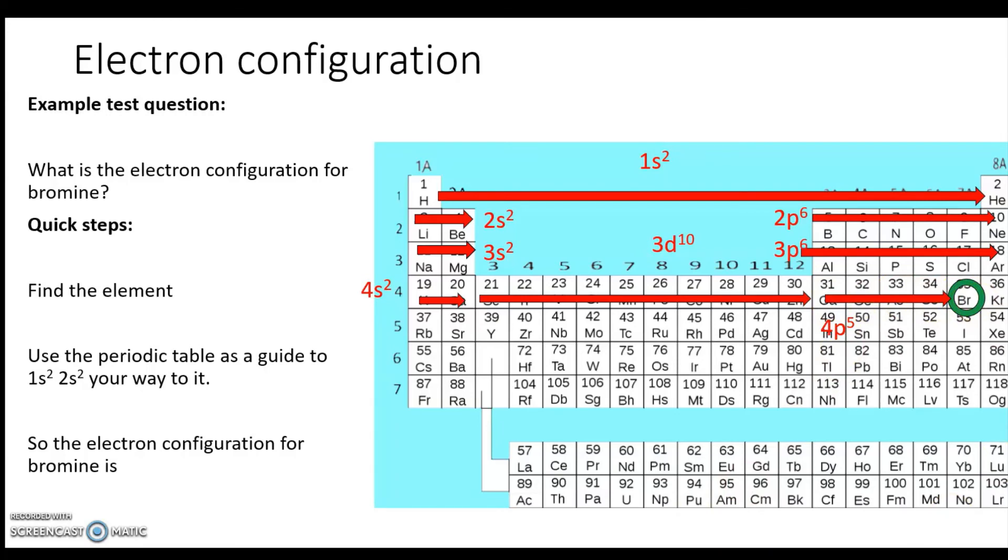So the electron configuration is another great example of why we have the shortcut method. It's [Ar] 4s² 3d¹⁰ 4p⁵. From here all the way to here is argon. And again, it does a great illustration of the shortcut.